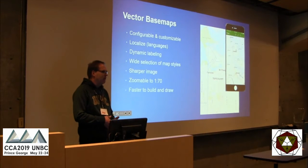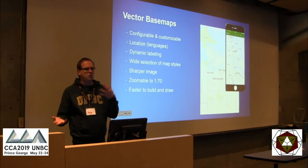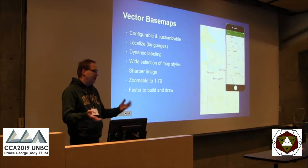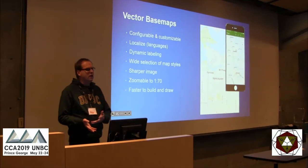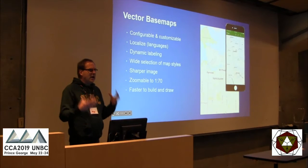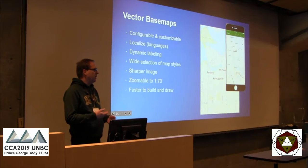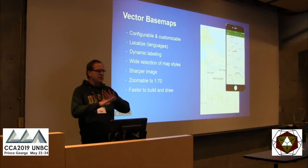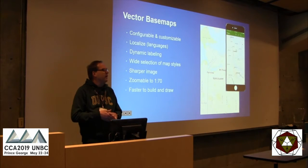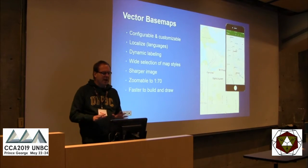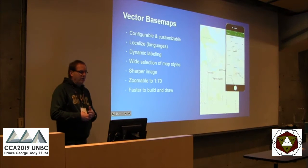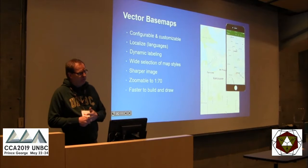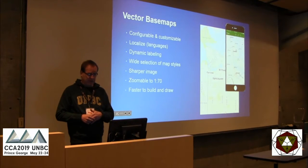Vector base maps are vector lines, points, and polygons but in a cached format, so there is no intelligence behind them. You can't click on a feature and get any attributes — it's essentially a background base map. The advantage of vector base maps over raster base maps is that they are configurable and customizable, and I'll show you how you can do that in a bit.